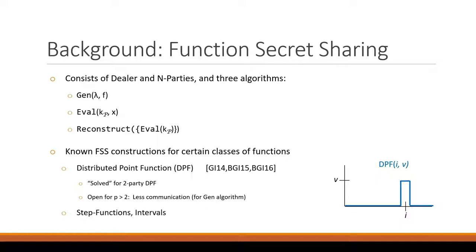The main parameters of interest for FSS is how many parties the solution works for, and how efficient the GEN algorithm is in terms of how big the keys are that are dealt to each party. Typically, the eval procedure is non-interactive, so each party is computing that locally. Then the reconstruction algorithm, the shares are combined, usually in just a simple linear adding over whatever group the point function is over.